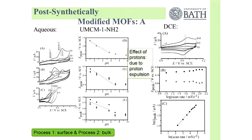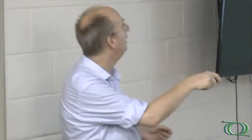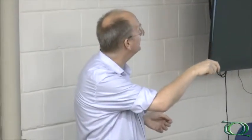When we started looking at this, this is UiO-66, you can see there are two processes. First a small process, and then a second big process. If I cycle a few times, the big process disappears. So actually we are destroying our material, destroying our MOF.